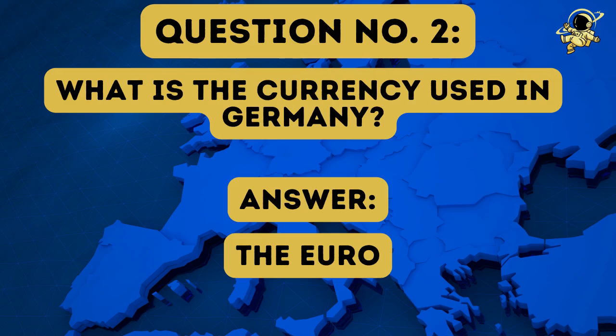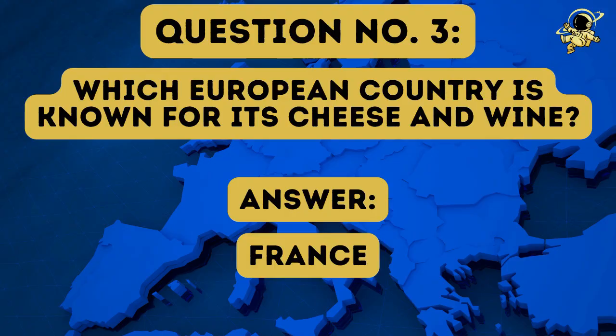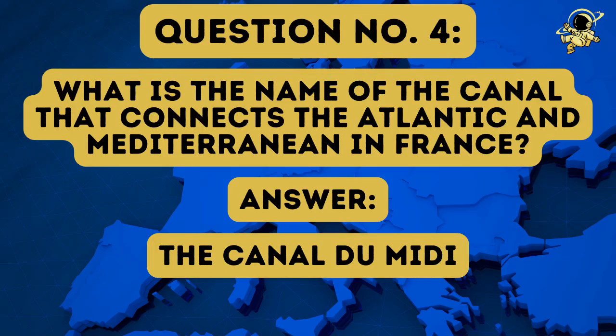Germany was part of the start of the Euro in 2002 already. And then we come to question number three: Which European country is known for its cheese and wine? The answer is France. And then we come to question number four: What is the name of the canal that connects the Atlantic and Mediterranean in France? And the answer to question number four is the Canal du Midi.